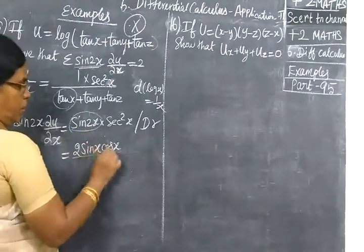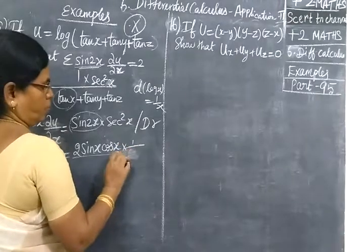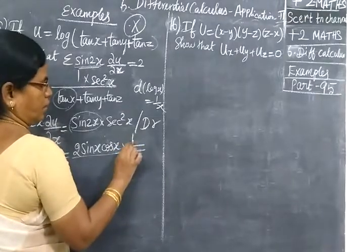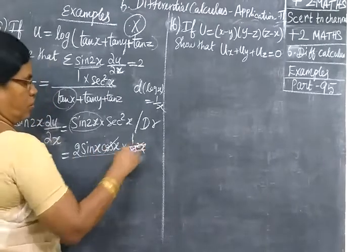Sin 2x square here. Expansion 2sin x cos x. Sequence square x. Sequence of x is one by cos square x. So one by cos square x. One cos value tan. It is.